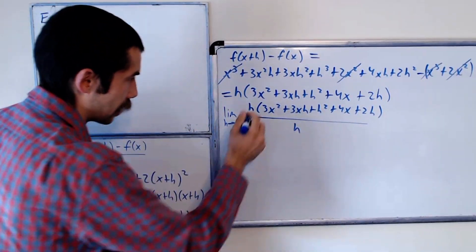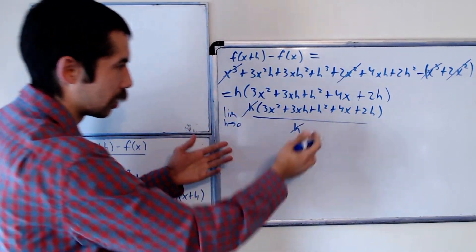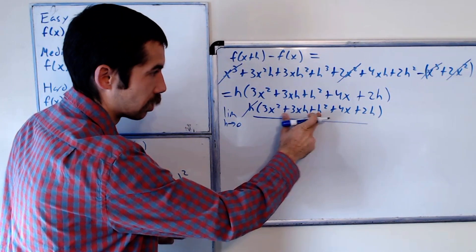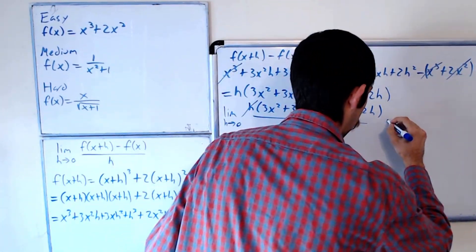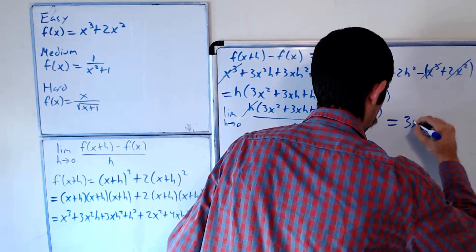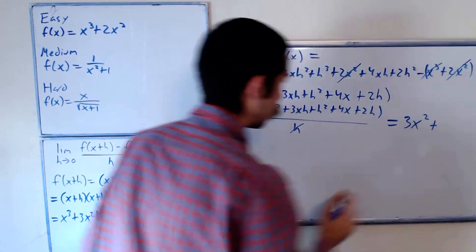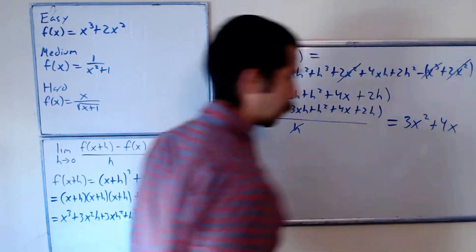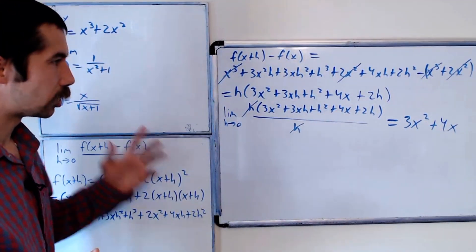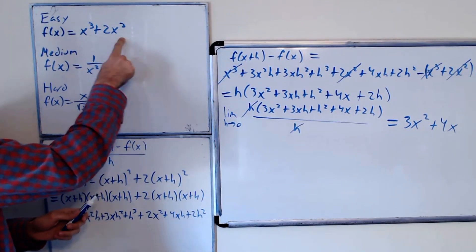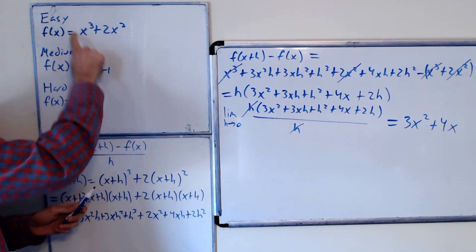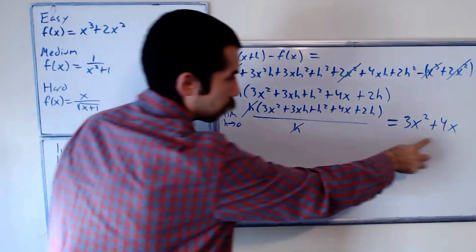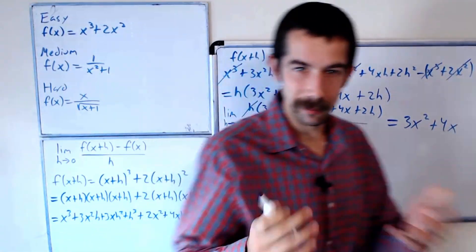The h's cancel, and when we evaluate h equals zero, the h terms go to zero and we're left with 3x² + 4x. You can check your answer using the power rule: the derivative of x³ + 2x² — bring the power in front — gives 3x² + 4x. We got the first one right.